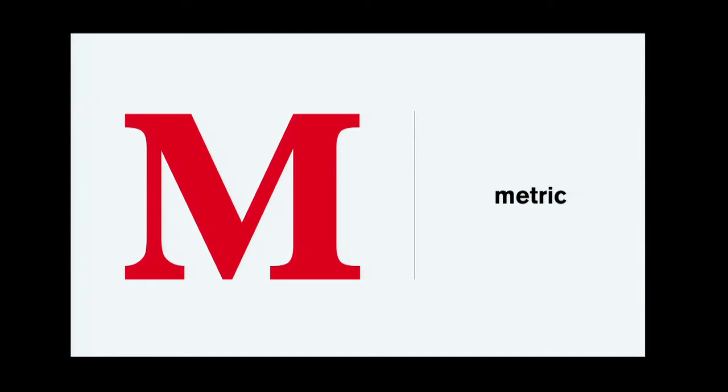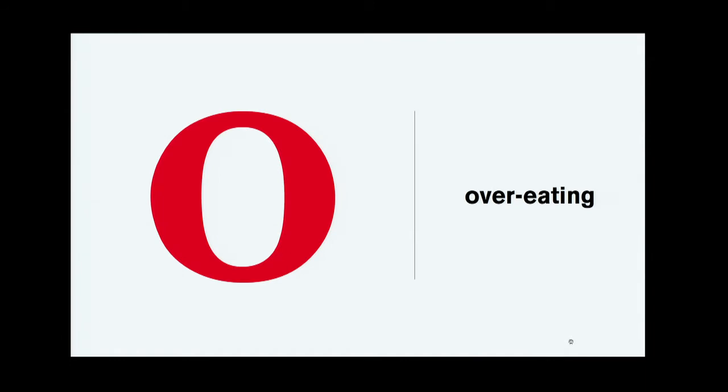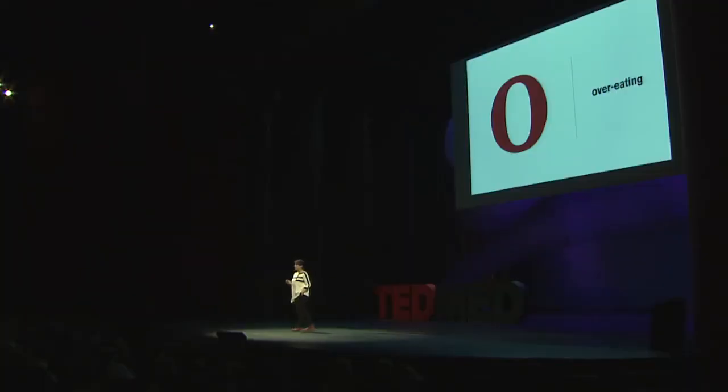M is for metric, N is for nutrition, and O is for overeating. I haven't been particularly English-language specific, but I am going to get US specific now. I don't understand why on food labeling in this country your nutritional information is given in metric — fat content, carbohydrate content is in grams and kilograms — and yet the weight on the packet is in pounds and ounces. How do you know if you're having too much or enough or you're overeating? You don't know because the language is a scientific language.